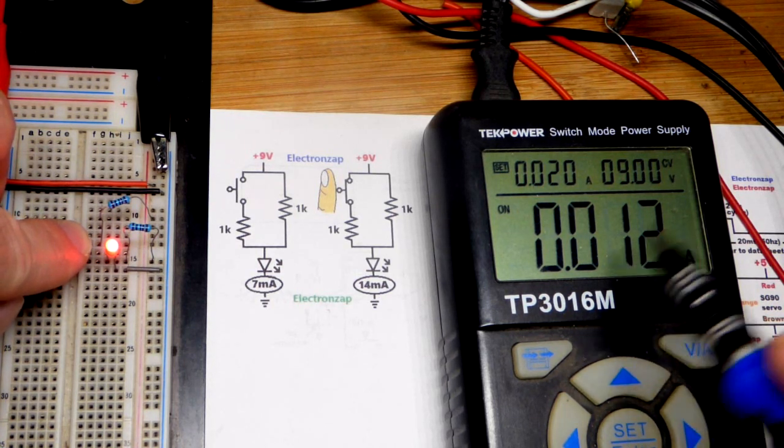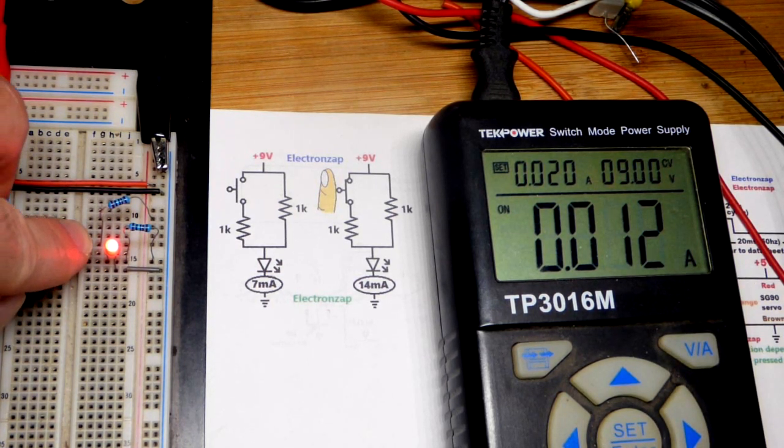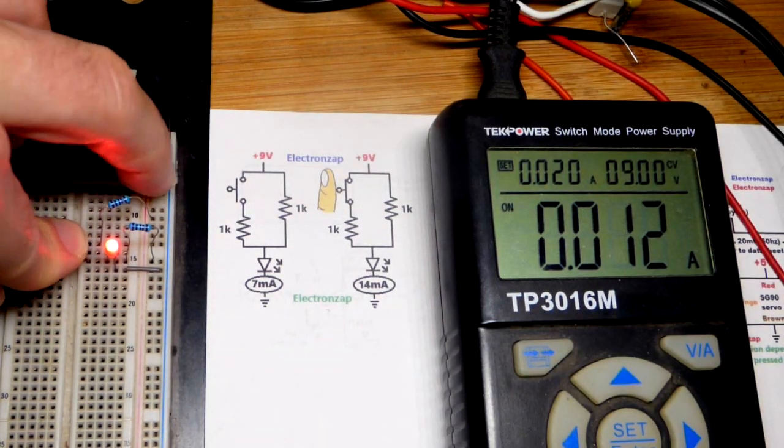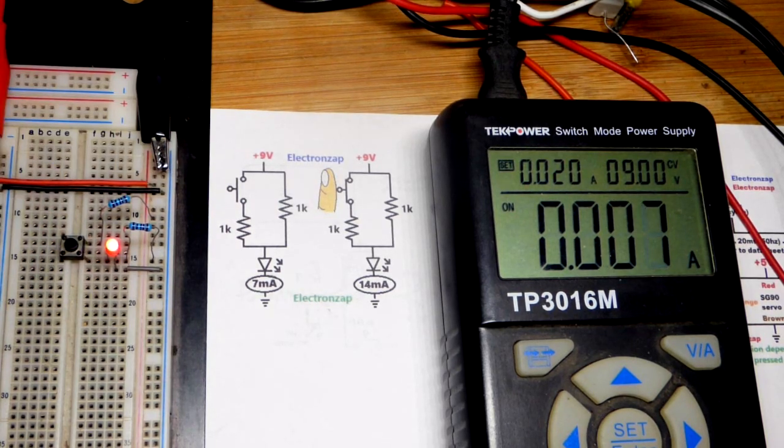If I hold the button long enough, it will get to 13 milliamps and then even 14 milliamps at some point. We might have a loose connection that throws things off, but you can see that we got basically twice the current.